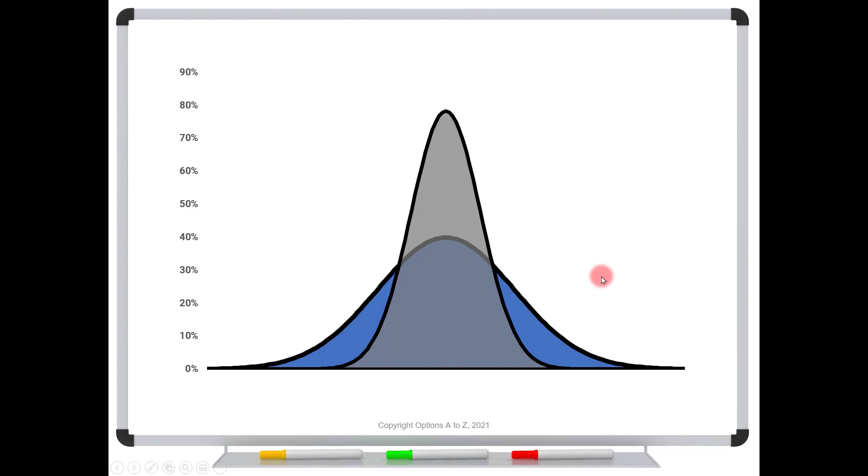However, if we keep all other factors the same, same stock, same strike, but we give more time to expiration or volatility has increased, we might move from the gray curve to the blue. And notice that the blue curve is shorter and wider. Again, just signifying that now we have a wider range of potential ranges for this stock price to move.